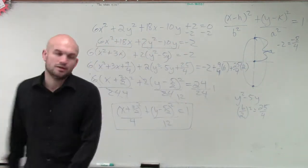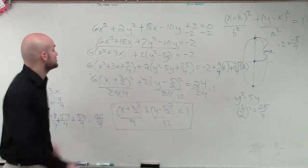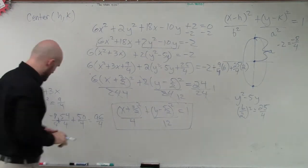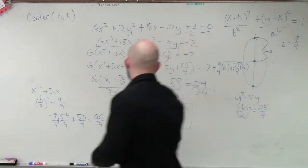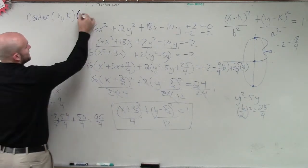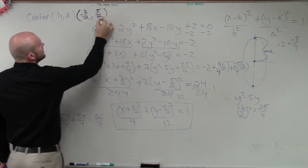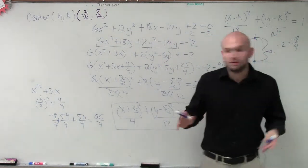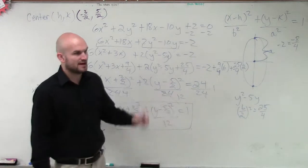So let's go through what we know. Ladies and gentlemen, center is going to be your h, k. So in this case, our center is going to be negative 3 halves comma positive 5 halves. Remember going back to the formula: x minus h and y minus k, so you take the opposite of h and the opposite of k.